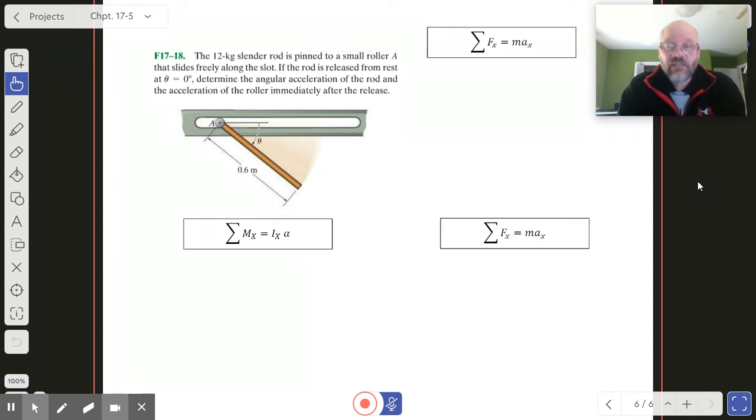Okay, so this is the last fundamental problem for this block of material for Chapter 17. We've got a rod and they've drawn it kind of funny, but it's in there at some angle. See the second sentence - if the rod is released from rest at theta equals zero.